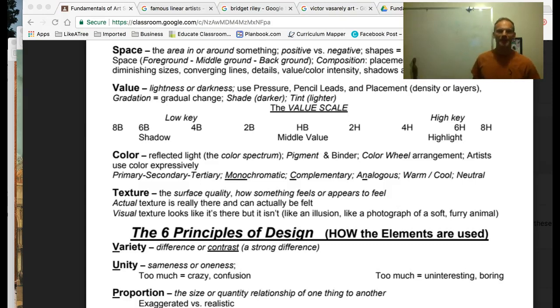Our fourth element of art that we're going to take a look at is space. And this one is packed with several concepts that are important for us to understand. First of all, our definition of space is simply going to be the area within or around something.